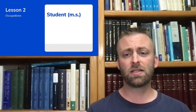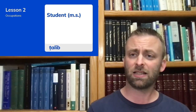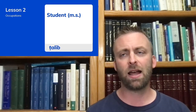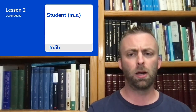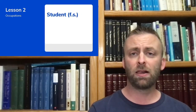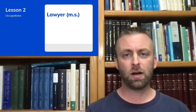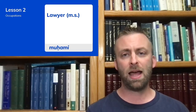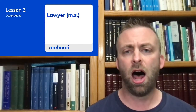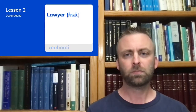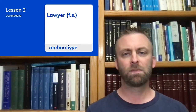Student in the masculine singular form is talib. Notice we have an emphatic letter here — the letter T has a dot underneath, giving it that cloudy emphatic sound: talib. The female form of student is talibe. Lawyer in the masculine singular is muhami — this has an emphatic H that makes a heavy breathing sound. The feminine singular form is muhamiyye.